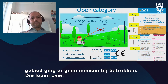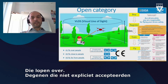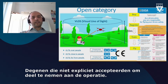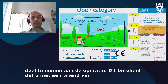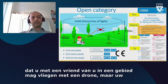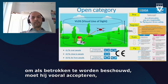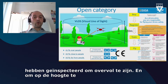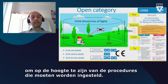Uninvolved people are those who did not explicitly accept to participate in the operation. You may fly with a friend in an area with your drone, but for that friend to be considered involved, they need to explicitly accept — you don't need to collect a signature, but you need at least an explicit consent to be overflown. They also need to be aware of what procedures to follow in case of a malfunction, and should always have the possibility to move away if, for example, the drone is crashing close to them.